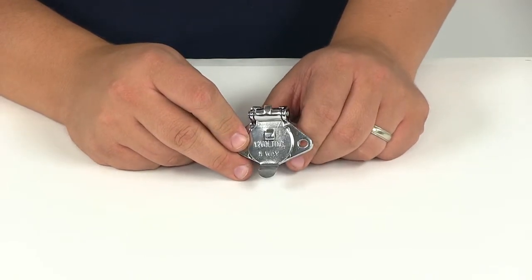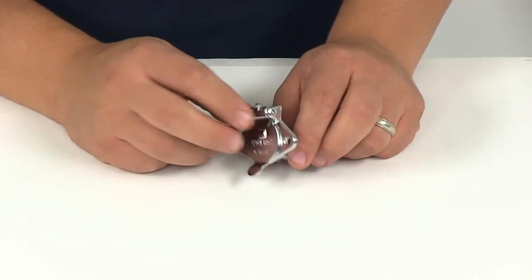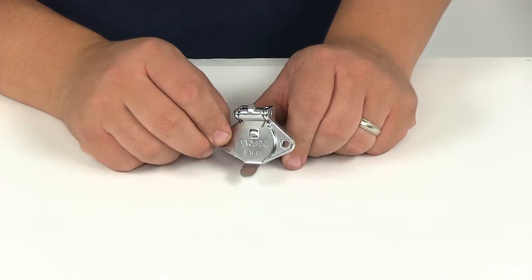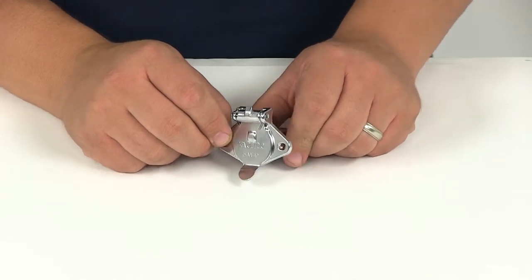It features concealed terminals for durability, which also provides for easy assembly. The chrome-plated zinc die-cast five-pole socket connects your trailer to your tow vehicle.